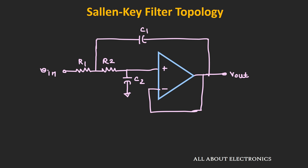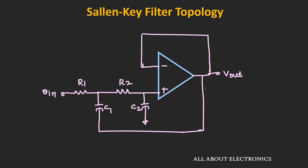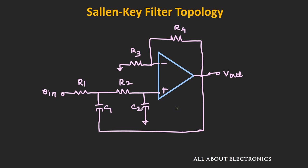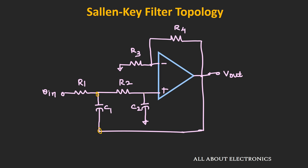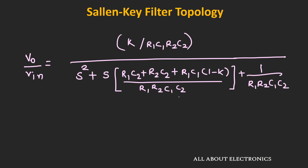One filter topology commonly used for Butterworth filter design is the Sallen-Key filter topology. In this topology, we have positive feedback from the output side — specifically from the output back to capacitor C1. This is known as the unity gain Sallen-Key low pass filter design. If gain is desired, a feedback resistor can be connected between the inverting and output sides. The transfer function of this Sallen-Key filter topology can be derived by applying nodal analysis at the relevant nodes.